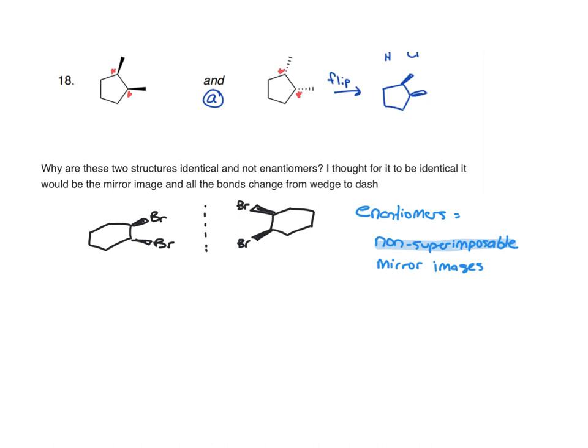So anything can have a mirror image, but that doesn't necessarily make it an enantiomer. For example, methane.